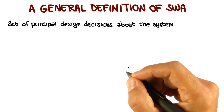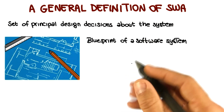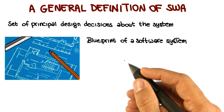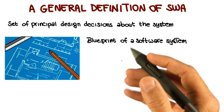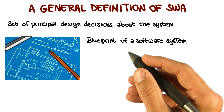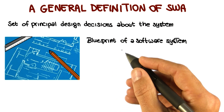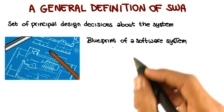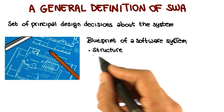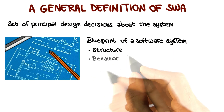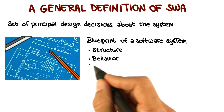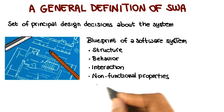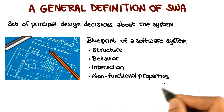That is, a decision that impacts a system's architecture. We can see a software architecture as the blueprint for a software system that we can use to construct and evolve the system. The key point is that this blueprint encompasses every facet of the system under development — its structure, of course, but not only. It also involves the behavior of the system, the interactions within the system, and the non-functional properties of the system.